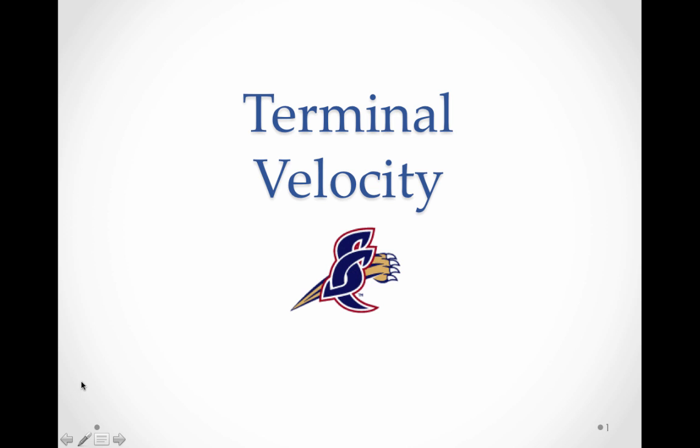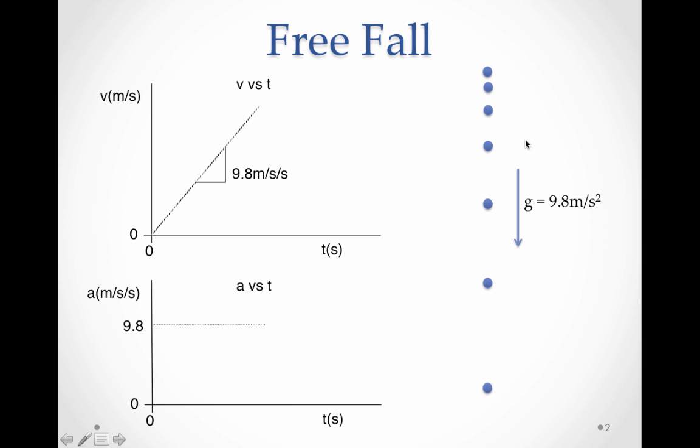Terminal Velocity. Objects dropped near the surface of the Earth will accelerate downward at around 9.8 meters per second per second, and that acceleration will remain pretty constant, and the object will speed up and get faster and faster at that rate and have a constantly increasing speed.